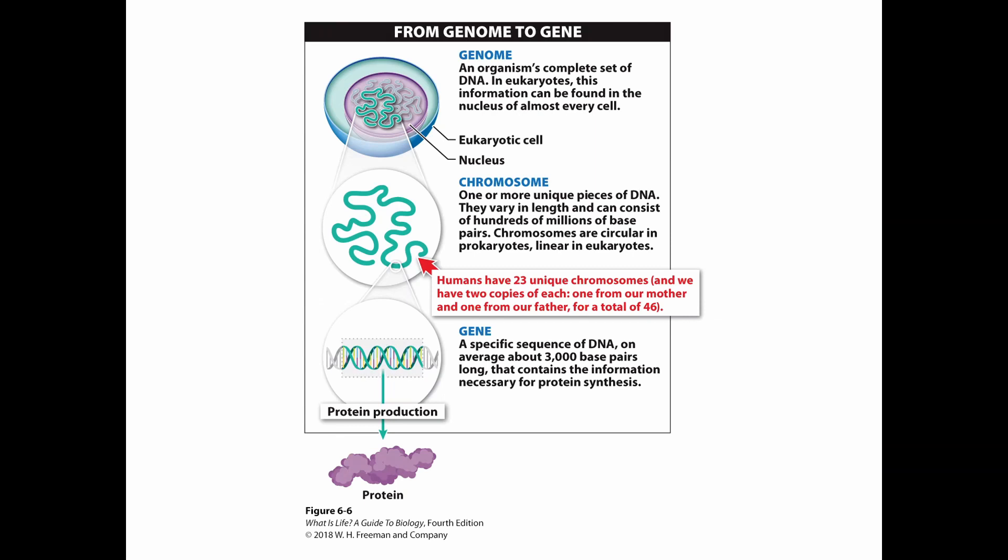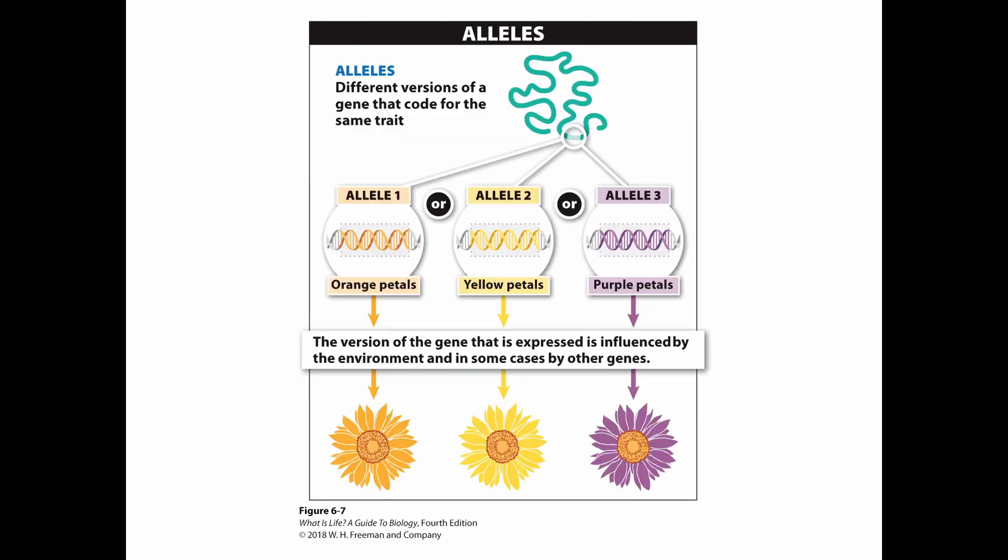On those chromosomes, we have specific segments called genes, which are about 3,000 base pairs long. Each gene is going to code for a very specific protein. Genes can come in different versions or varieties called alleles. The gene is for that particular trait, and the alleles are different versions of that trait.